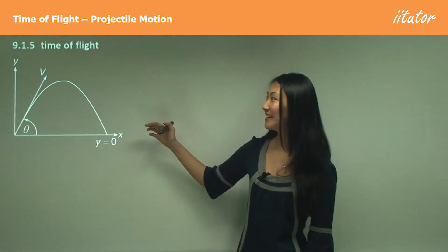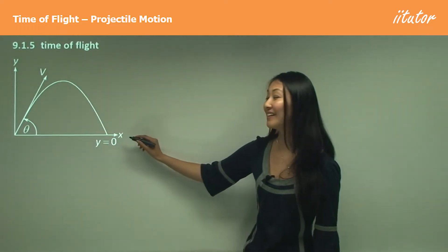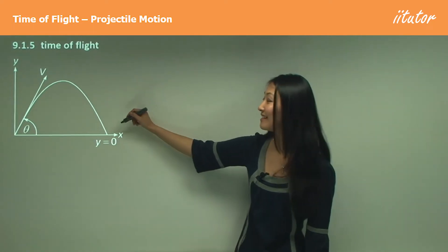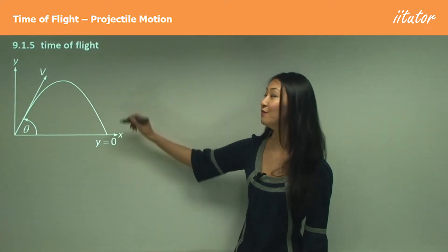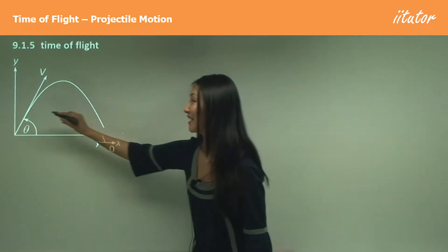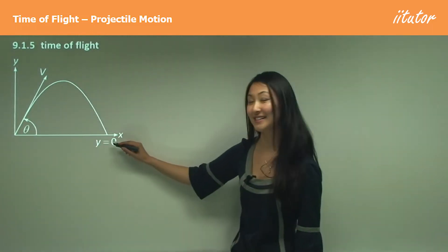If you're thinking about the time it takes to go up and come back down again, that time is going to finish when it lands. That means when it lands, your vertical displacement is at zero again, because it's starting up at zero, going up, coming back down.